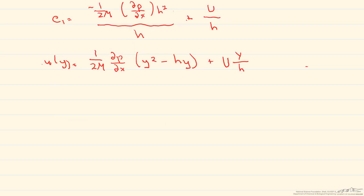Note if the pressure is constant, the pressure gradient here is zero, which makes this entire term zero. So what we're left with is u(y) equals U divided by h times y, which is linear.